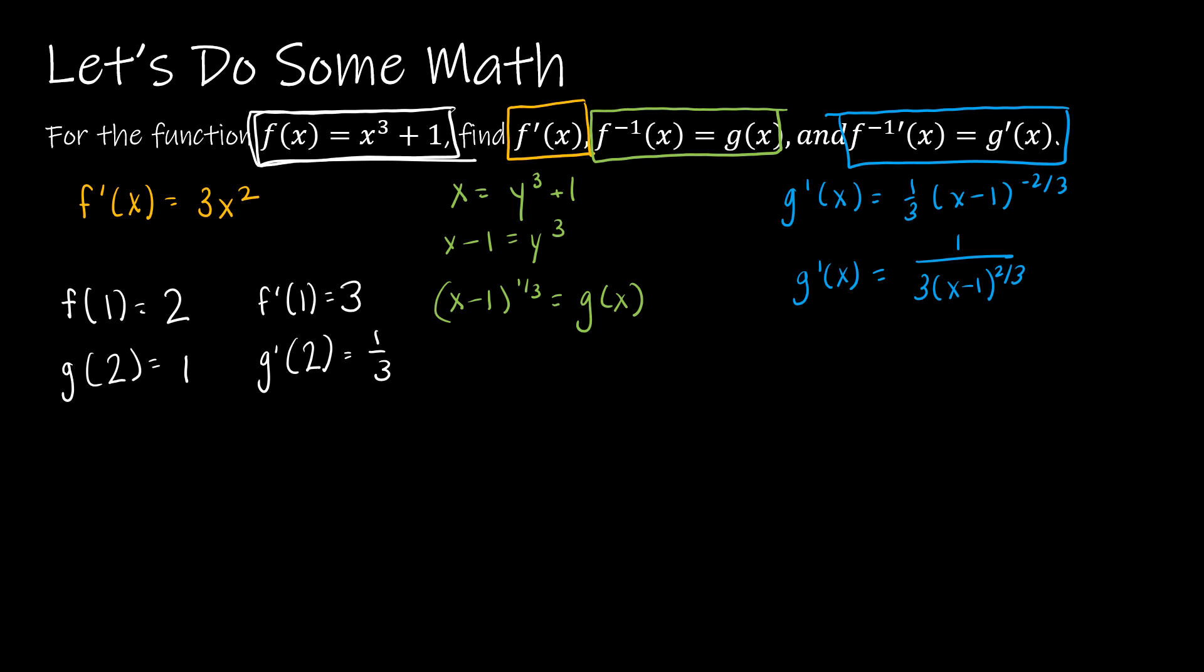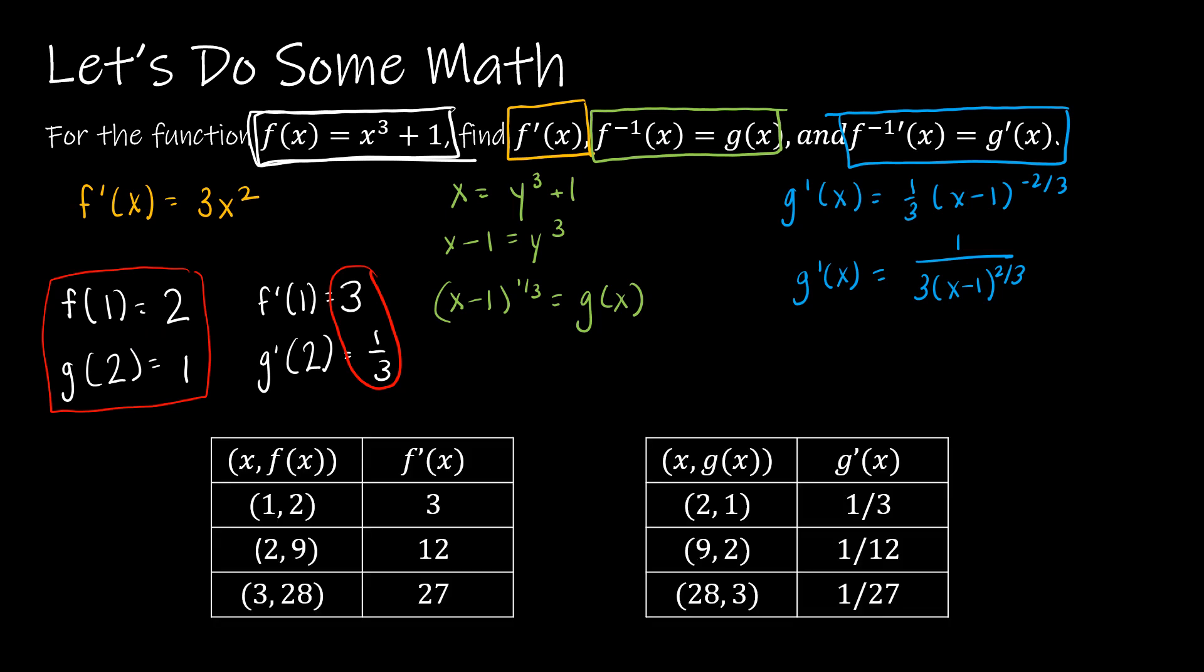So right now, looking for a pattern, it looks like these two are related as inverses. And that we already knew that this was going to happen, right? That f and the inverse, if (1, 2) is in f(x), then (2, 1) is in g(x), which is the inverse.